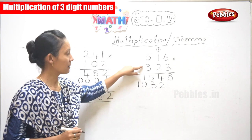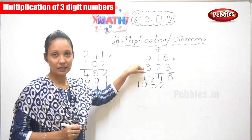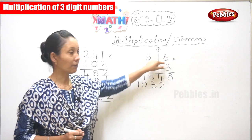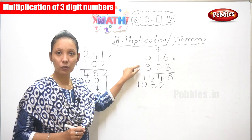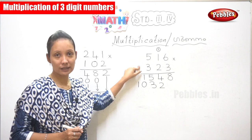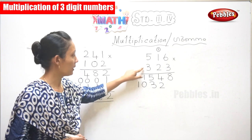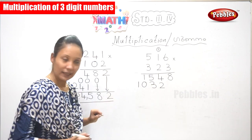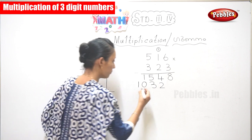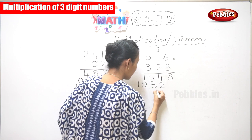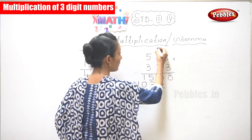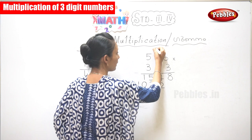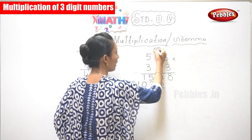You have finished two steps. The last is the third step — you have to multiply 3 with all these numbers.